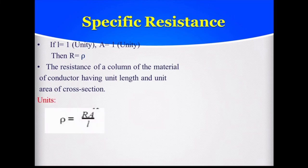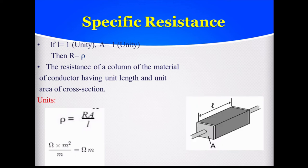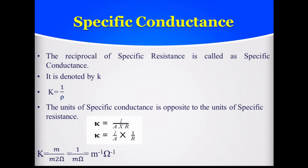Now for the unit of specific resistance: from the equation ρ = R × A / L, the unit of resistance is Ohm, area of cross-section is meter squared, and length is meter. Meter cancels with meter, leaving only Ohm·meter. So the unit for specific resistance is Ohm·meter. Another common unit is Ohm·centimeter. A is area of cross-section and L is length of the wire.